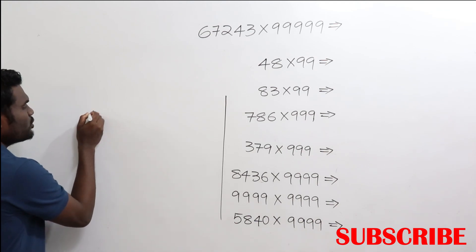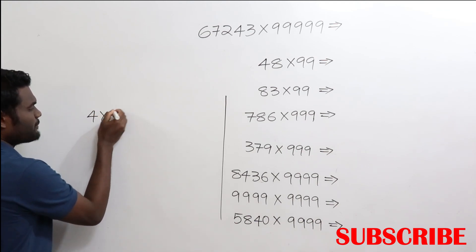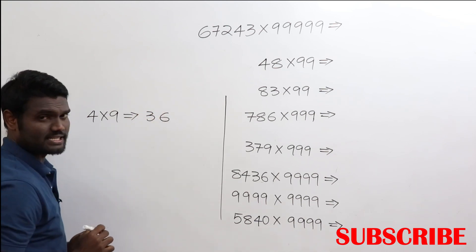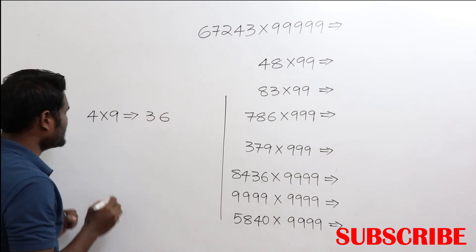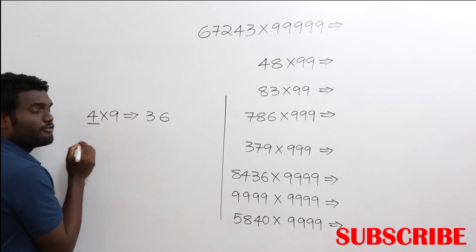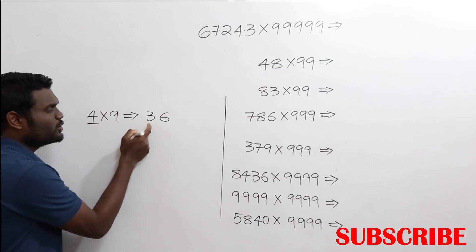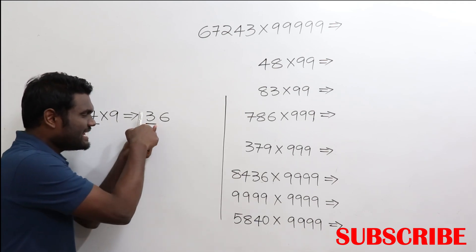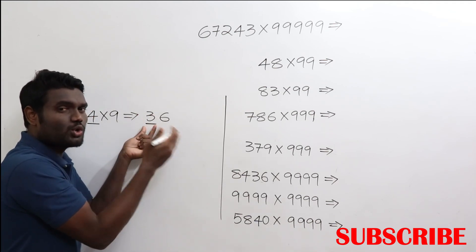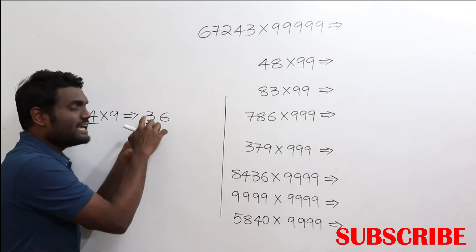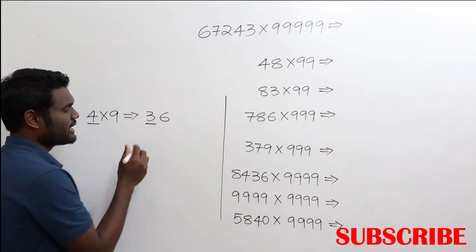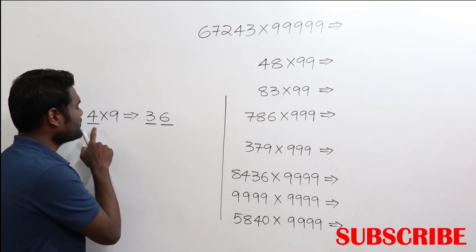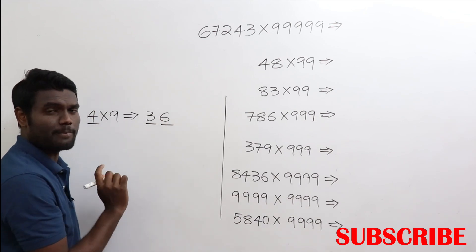For example, what is 4 times 9? Four times nine is 36. Here's the logic: for 4, do one less — that gives you 3. Next, for 3, how much more do I need to add to get 9? If I add 6 more I can get 9. So you write that 6, and you can say that 4 times 9 is 36.